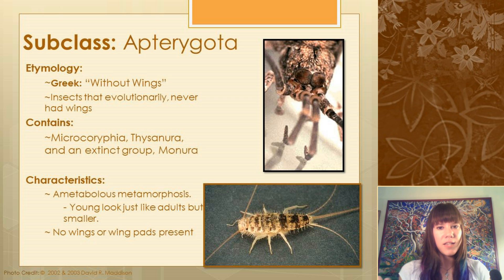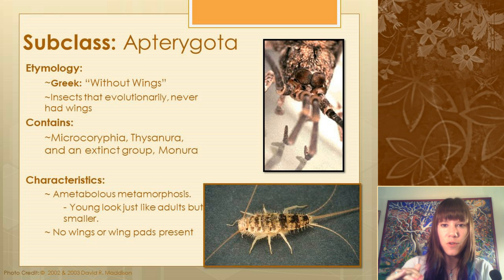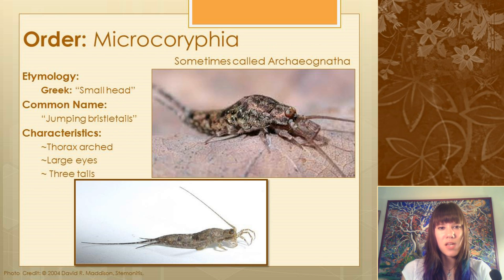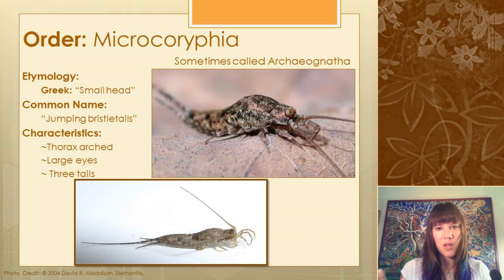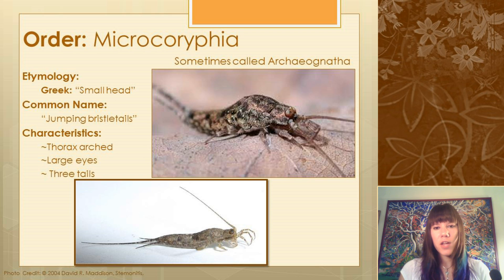We're currently in the group Apterygota — meaning 'without wings' — at the very bottom of the insect tree. The first order here is Microcoryphia, sometimes called Archaeognatha in older literature. In Greek, Microcoryphia means 'small head' and Archaeognatha means 'old jaws,' referring to mouthparts similar to ancestral hexapods not fully modified into typical insect mouthparts. Their common name is jumping bristletails — yes, they jump — and their characteristics include an arched thorax and very large eyes.